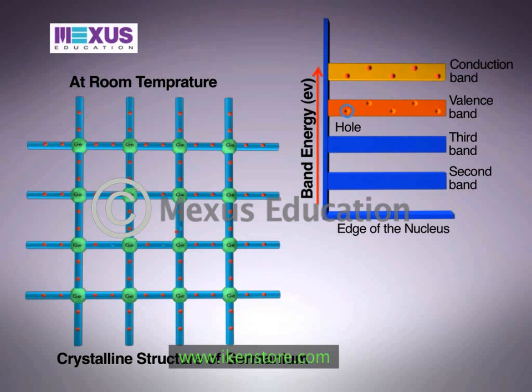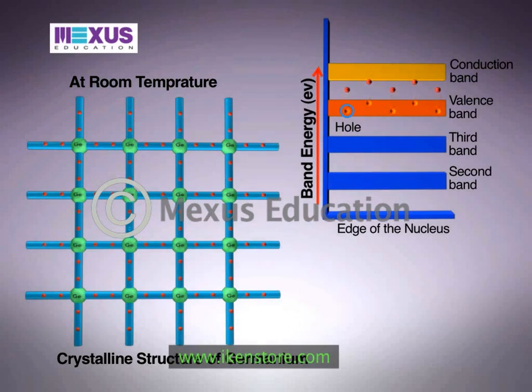Thus, equal numbers of electrons and holes are present in an intrinsic semiconductor.